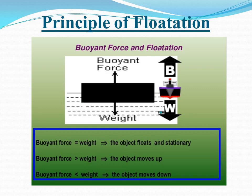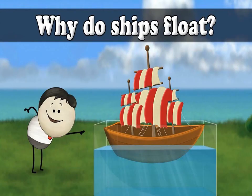The first condition is: an object floats if its weight equals the upthrust force. The second condition is: an object floats if the upthrust is greater than the weight. An object sinks if its weight is greater than the upthrust. As for ships — as long as the weight of the ship is less than the upthrust it floats, but if it carries more passengers or goods, its weight becomes greater than the upthrust and it will sink.